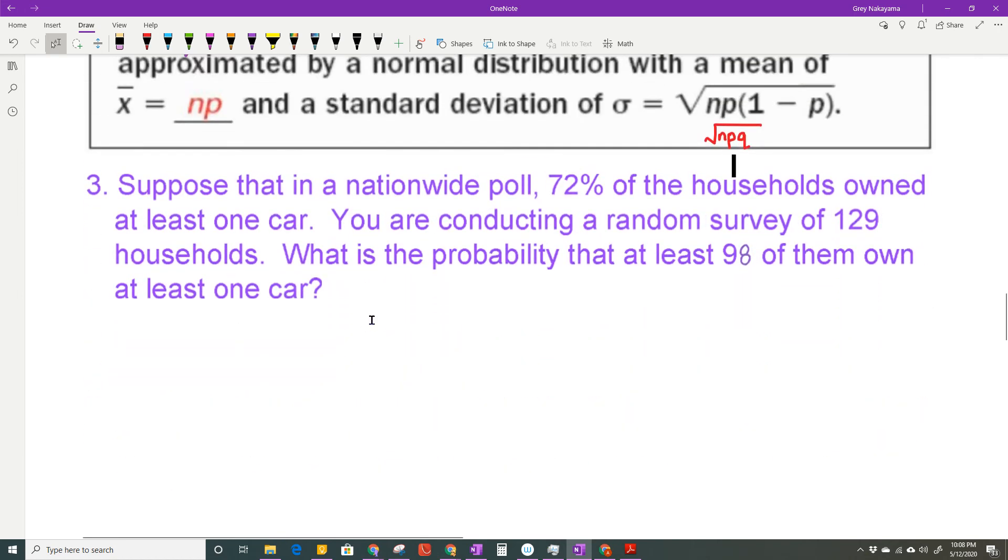Suppose that in a nationwide poll, 72% of the households owned at least one car. That makes it a binomial because you either own a car or you don't. You are conducting a random survey of 129 households. What is the probability that at least 98 of them own at least one car? So, it is a binomial. I'm still going to have my picture of my normal curve because my normal curve is approximating them. I'm using a normal approximation of a binomial distribution, but I don't know what these numbers are down here. Because they didn't give me a mean or a standard deviation in here. So, that's another clue. I've got to go use this formula and that formula to go find my mean and standard deviation.